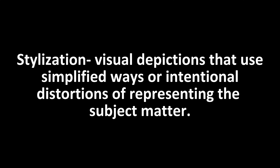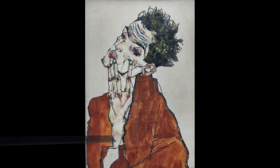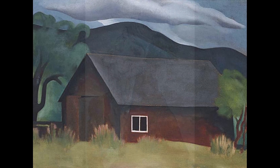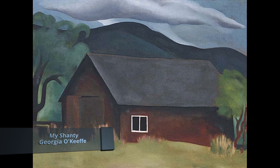Stylization, or stylized, refers to visual depictions that use simplified ways or intentional distortions of representing objects or scenes that do not attempt a full, precise, and accurate representation of what they actually look like, preferring an attractive or expressive overall depiction.